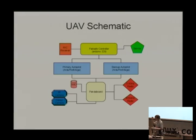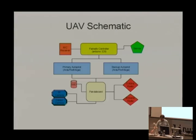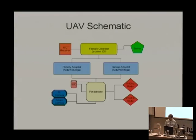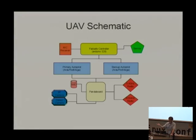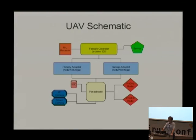XBees are also not open — the innards aren't open. The protocols are reasonably open, but if you want to hack on them and extend their capabilities, there's very little you can do. So we were interested in developing a telemetry radio for multi-copters, small fixed-wing aircraft, and rovers, using an open protocol and open implementation, with much better range and performance than what we could get out of things like the XBee.